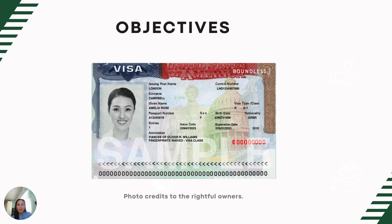The first step in the process to obtain a K-1 visa is the U.S. petitioner to file and submit a petition for Form I-129F, or what we call the petition for alien fiancé, with USCIS. This K-1 visa allows a United States citizen to bring his or her fiancé to the United States for the purpose of marriage and becoming a lawful permanent resident.